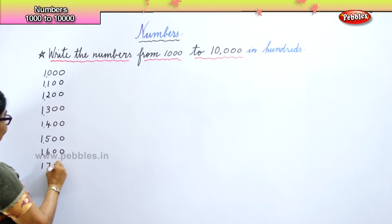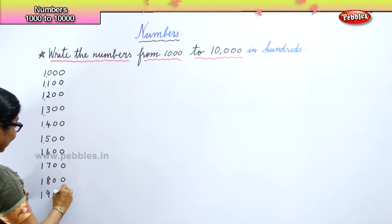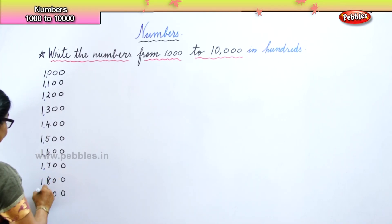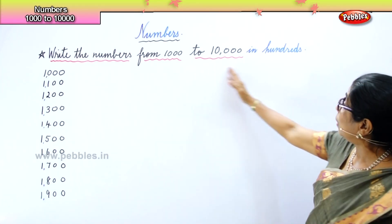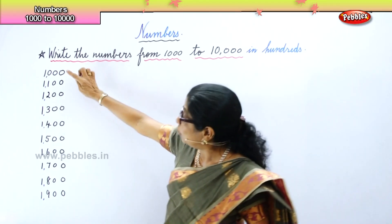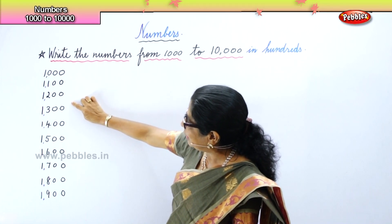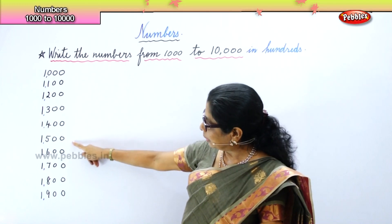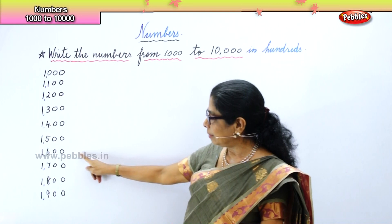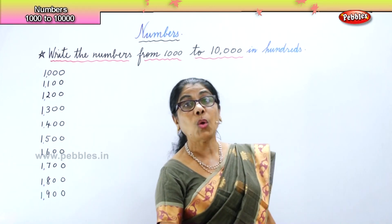One thousand seven hundred. One thousand eight hundred. One thousand nine hundred. Now look at the numbers very carefully: 1,000; 1,100; 1,200; 1,300; 1,400; 1,500; 1,600; 1,700; 1,800; and finally 1,900.